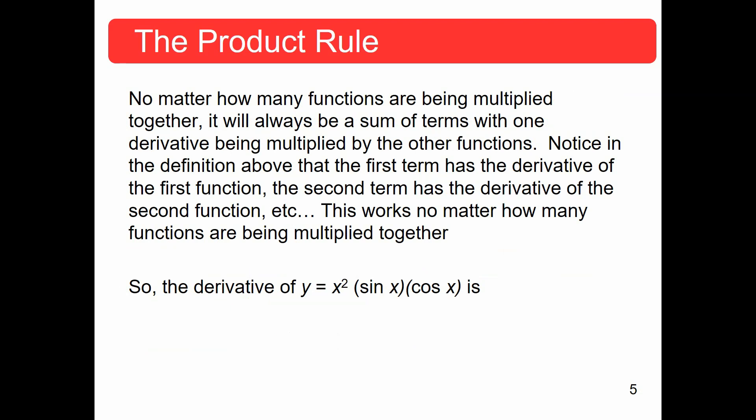No matter how many functions are being multiplied together, it'll always be a sum of terms with one derivative times the others. Notice in the definition above, the first term had the derivative of the first function, the second term had the derivative of the second, and the third term had the derivative of the third function.